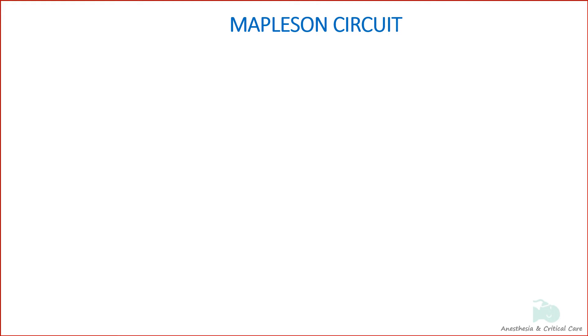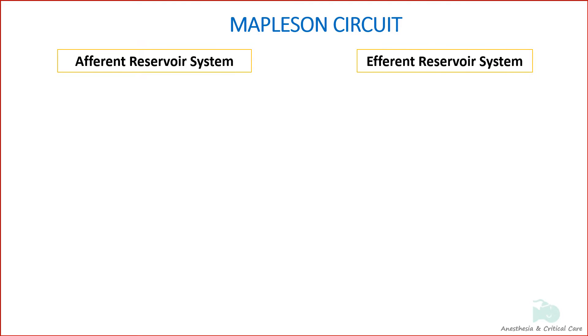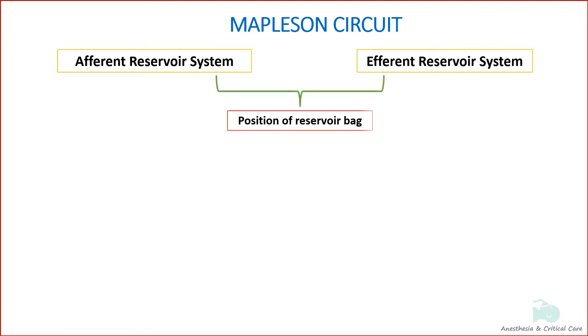Mapleson systems, which are bi-directional systems, are classified as afferent reservoir systems and efferent reservoir systems based on the placement of the reservoir bag in the circuit.